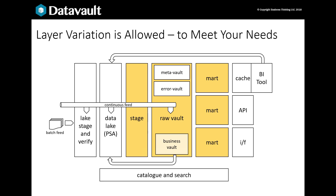And finally, we can add a catalogue. This can offer search functionality and a glossary. It would point to the sources of data within the lake, mart or vault layers that match business keywords.